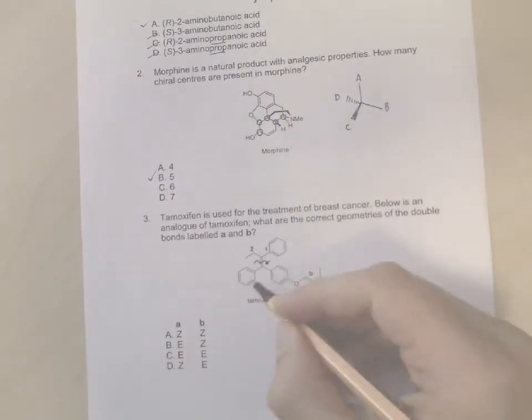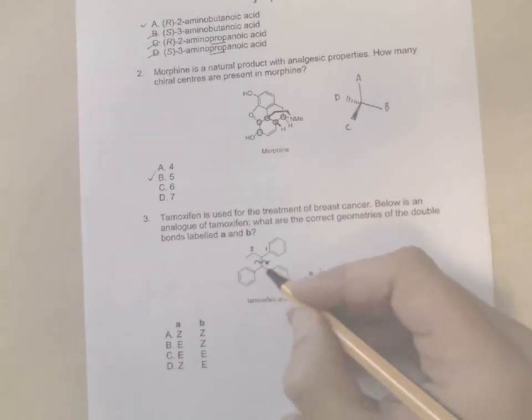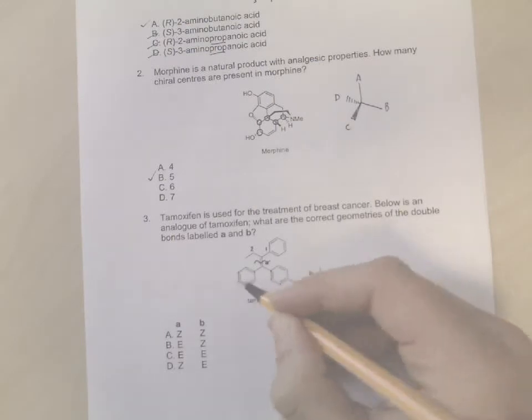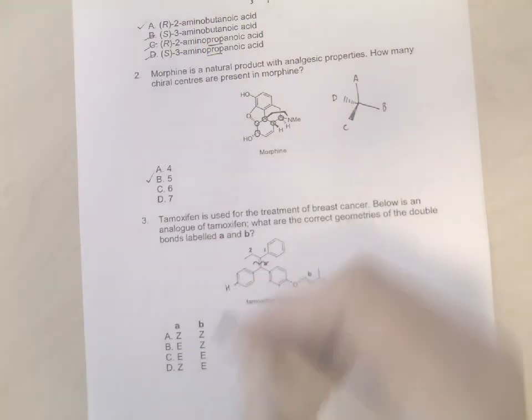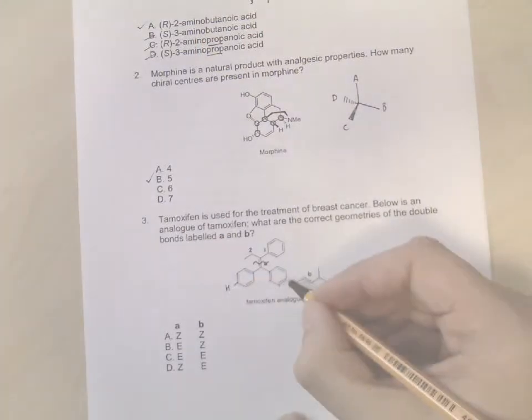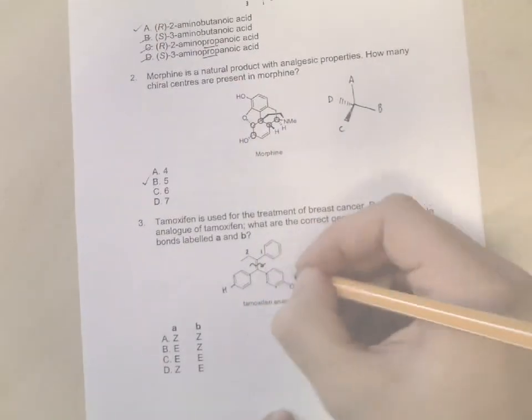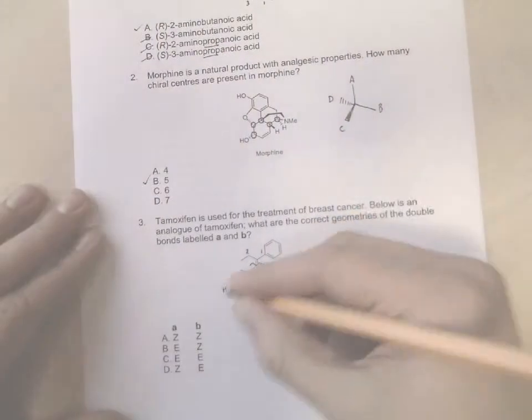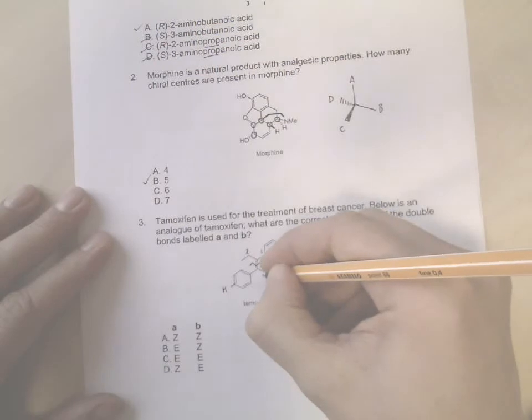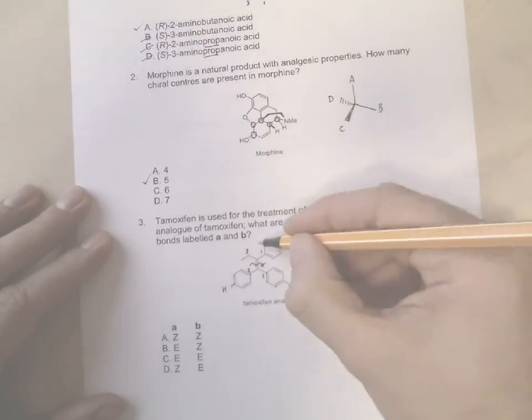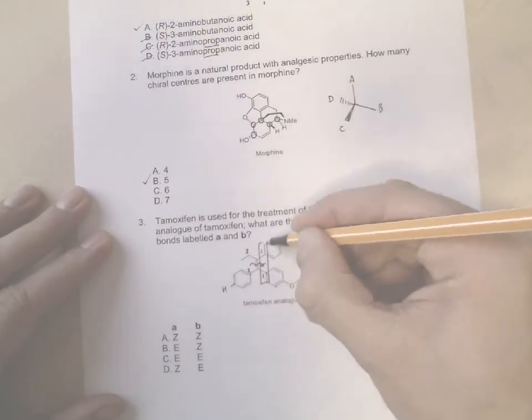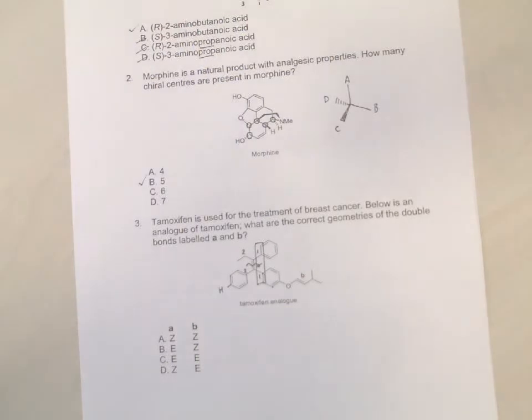Moving down to the other side, they're both benzene rings, so these two atoms have the same priority, these two have the same priority, these two have the same priority. And it's only when you get to the para position, the substituted para position, that this benzene ring has a hydrogen on it whereas this benzene ring has an oxygen on it.